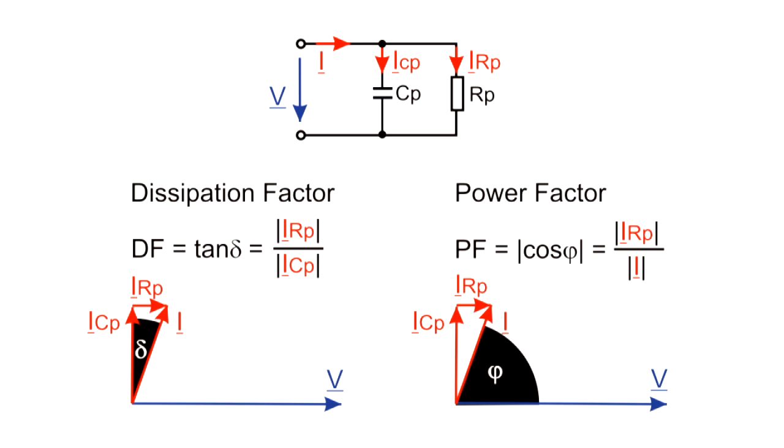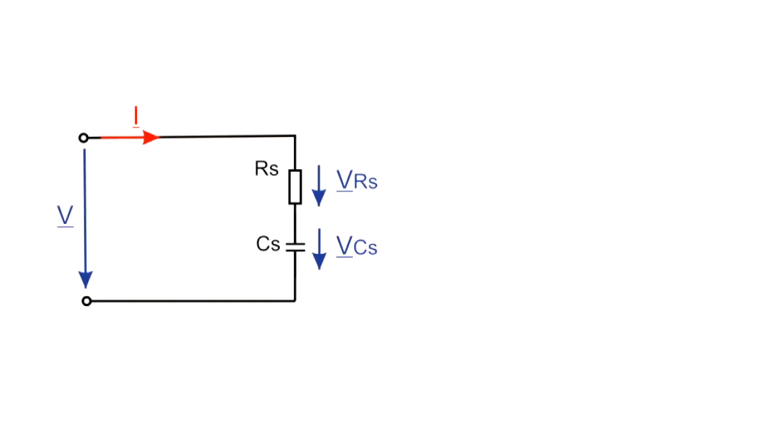Conductive losses which result in DC leakage currents can best be represented with a parallel equivalent circuit. Polarization losses, which may result from AC voltages, can be represented by an equivalent circuit consisting of an ideal capacitor with a resistor in series.